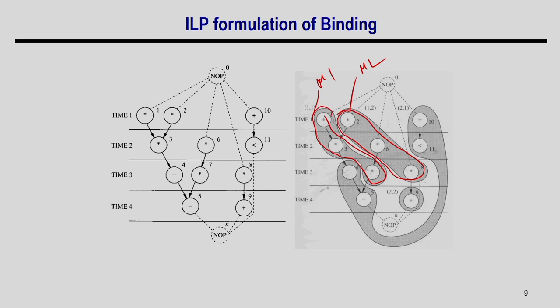For ALU binding: there is 1 ALU operation at one point and 2 occurring in parallel at another, so at least 2 ALUs are needed. Writing the same constraints as for multipliers — each ALU operation maps to only one ALU, and each ALU executes at most one operation per timestamp.